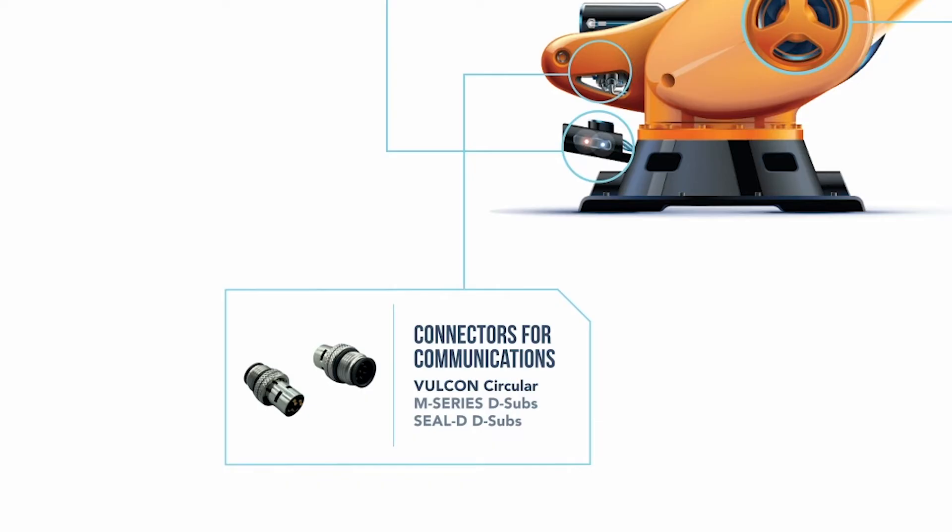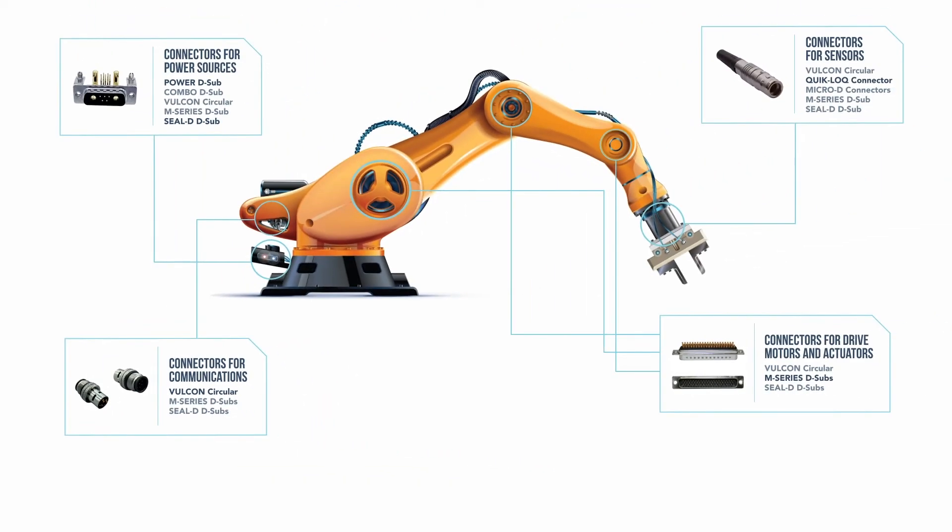With the right connectors, communication lines are always open. EMI RFI shielding protects against cross signals that can disrupt and damage robotics.